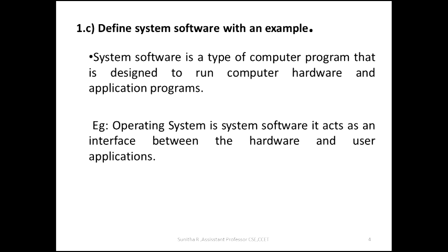Moving to the next slide: define system software with an example. Software is a set of programs, and a program is a set of instructions. Software is of two types: application software and system software. System software — when the computer starts, the minimum programs needed are set up, because without a program the computer is a dumb machine. Such programs that are already stored and make the computer work are called system software.